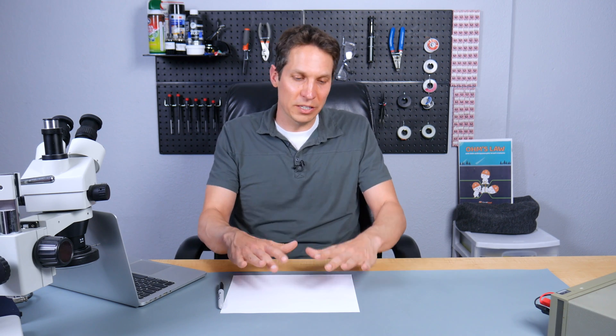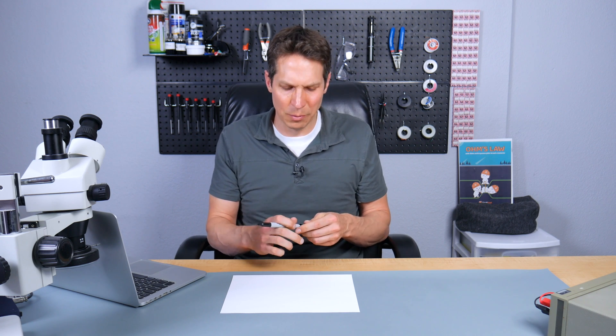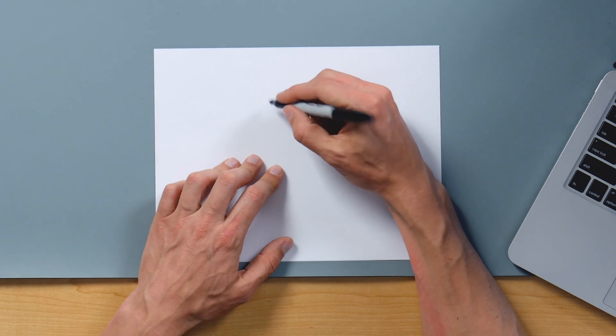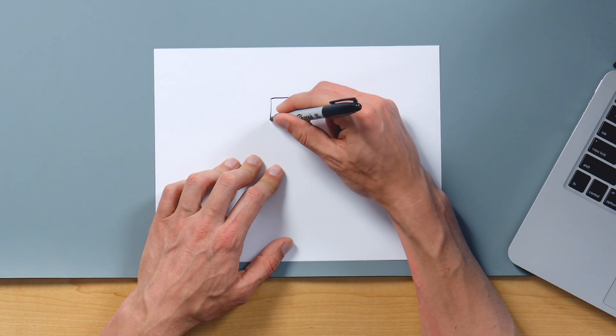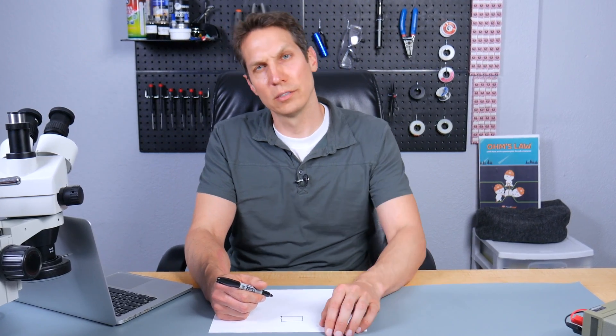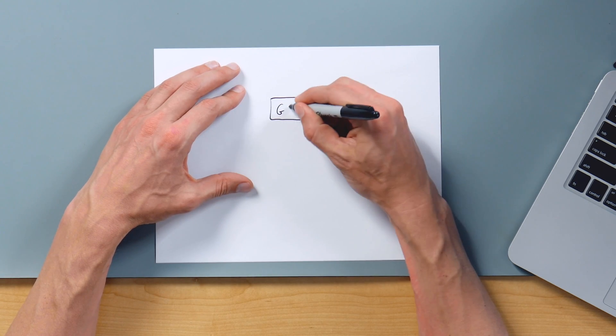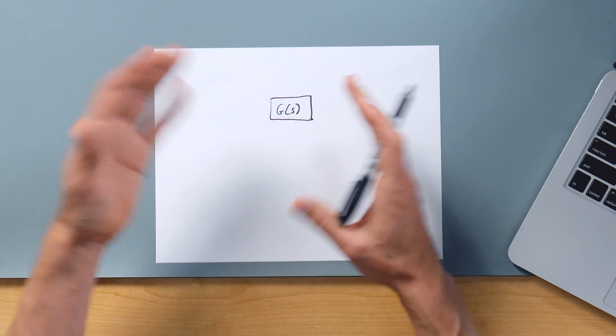Block diagrams are basically just a way to represent the system, and they are made up of multiple parts. First, we start with a block. A block is pretty straightforward — you have a rectangle, and this rectangle represents a subsystem or a system. We usually just put something in there like G of s, saying that G of s represents a transfer function.